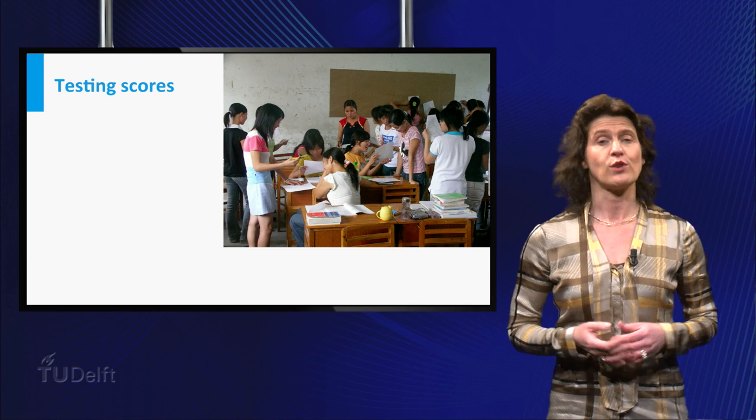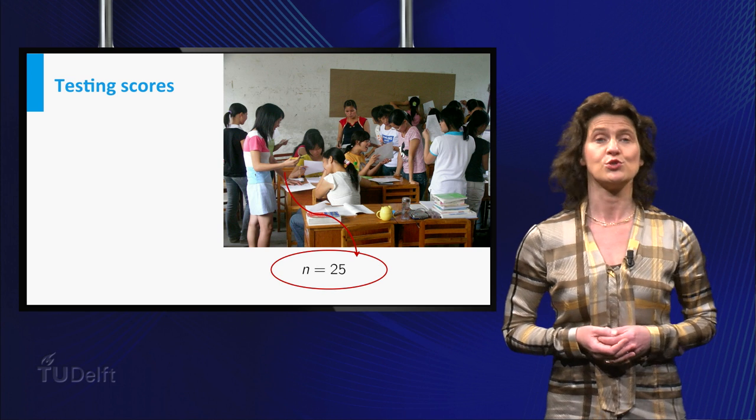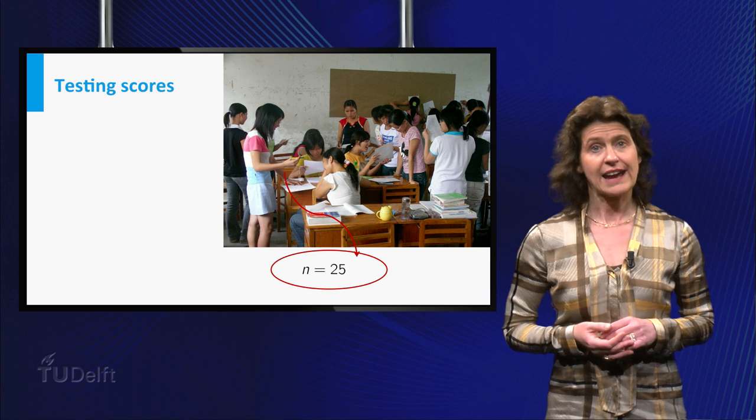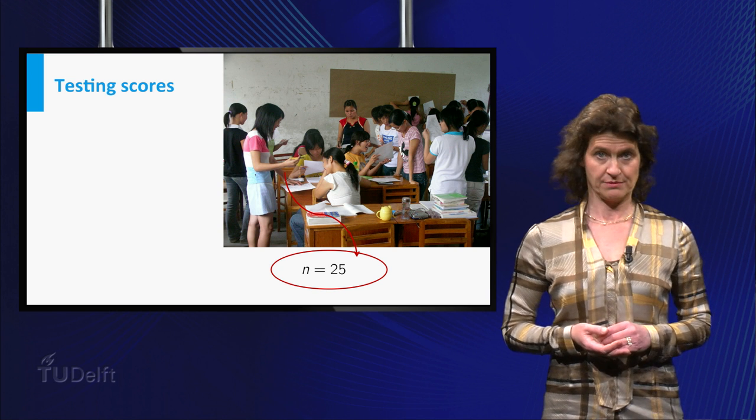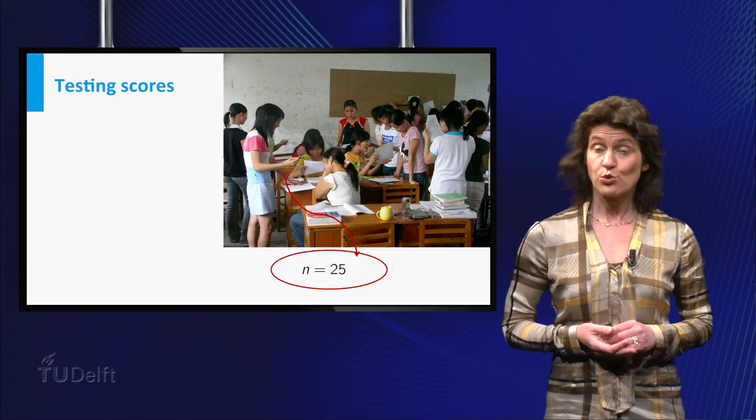So let's go back to our example of school kids doing an arithmetic test. Suppose you choose 25 children at random and suppose that their average score on the test turns out to be 56 points. Is it a coincidence that the score is below the national mean score or not?